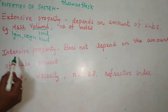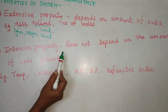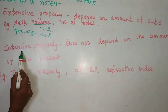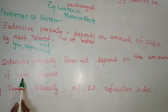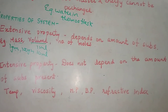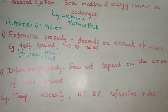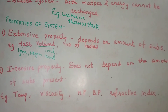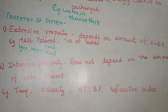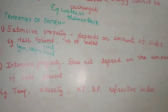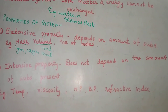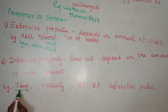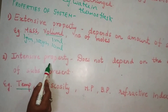Intensive property is a property of a system that does not depend on the amount of substance present. No matter how much the amount changes, the value of the property remains the same. For example, temperature is an intensive property.